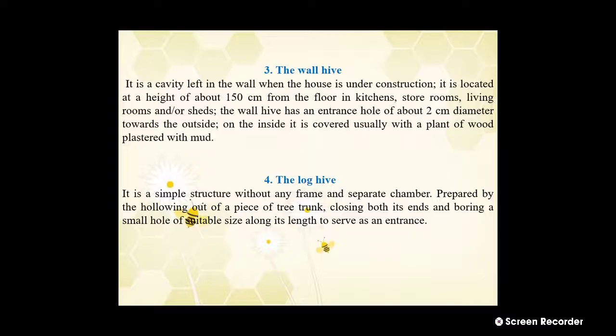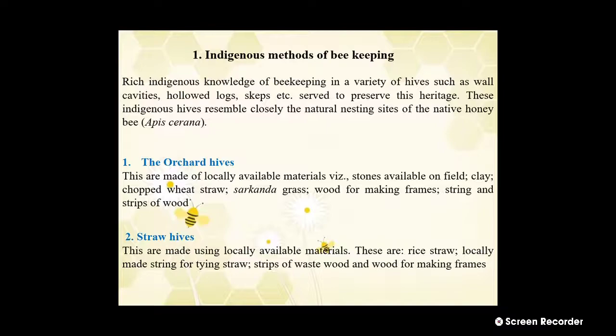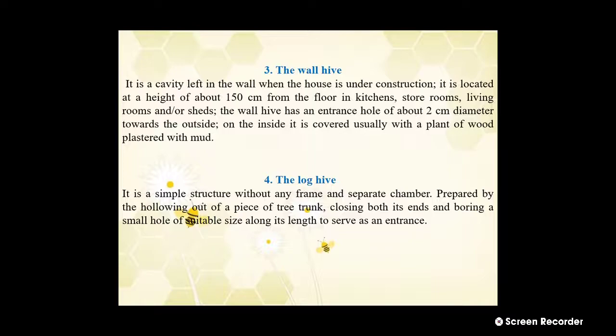The next type is the log hive. It is a simple structure without any frame or separate chamber, prepared by hollowing out a piece of tree trunk, closing both its ends, and boring a small hole of suitable size along its length to serve as an entrance. These are the four types of indigenous methods of bee keeping: orchard hive, straw hive, wall hive, and log hive.